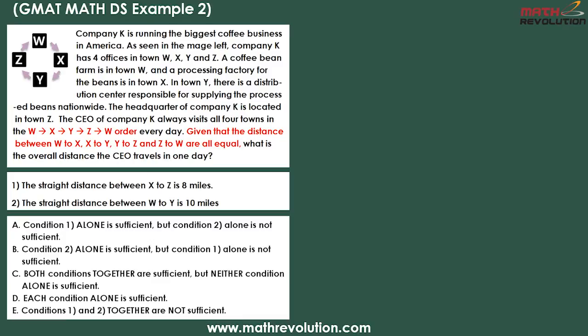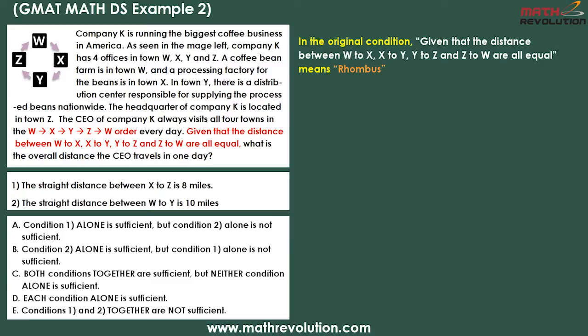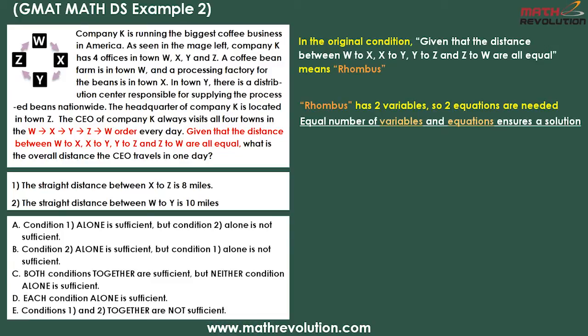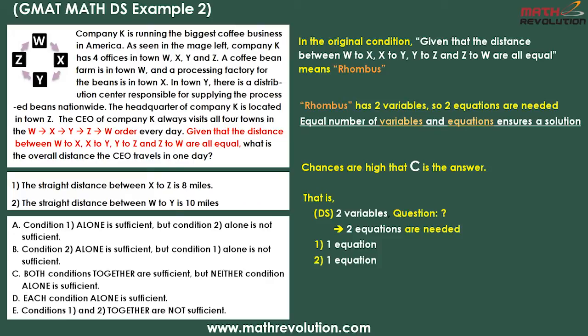Looking at the second question with the drawing on the screen, you will feel yourself wishing to break the computer and just give up. But none of this will happen if you know how to use the variable approach. According to the variable approach, saying that four sides are equal is the same as saying that we have a rhombus. Since a rhombus has two variables, we need two equations to solve this problem — in the DS section, an equal number of variables and equations ensures a solution. C is likely our answer because both statements taken together are sufficient to answer the question, but neither statement alone is sufficient. Condition 1 gives us one equation and condition 2 gives us another, for a total of two equations that allow us to solve for the two variables. Therefore, the best answer is C.